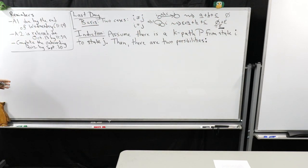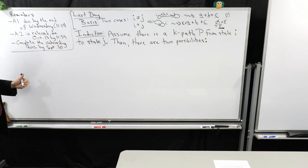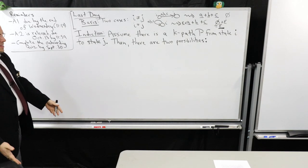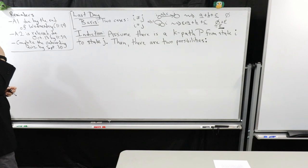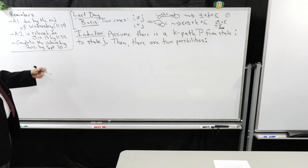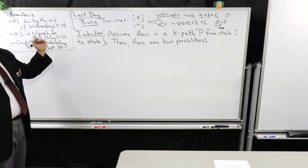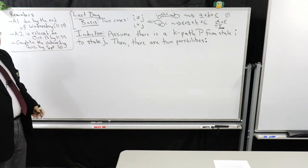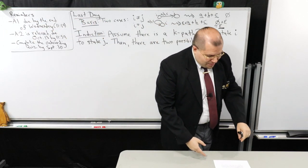I want to get into this induction part, because this is probably the slickest thing in this lecture. You're going to find out why the k-path is really important. For the sake of induction, I'm going to assume there is a k-path p from state i to state j. There are going to be two possibilities, and it really boils down to this.